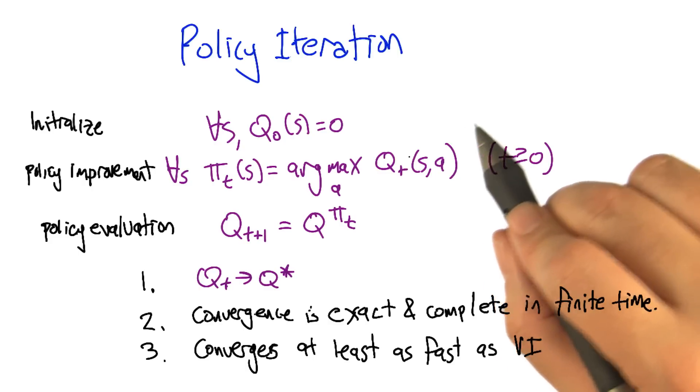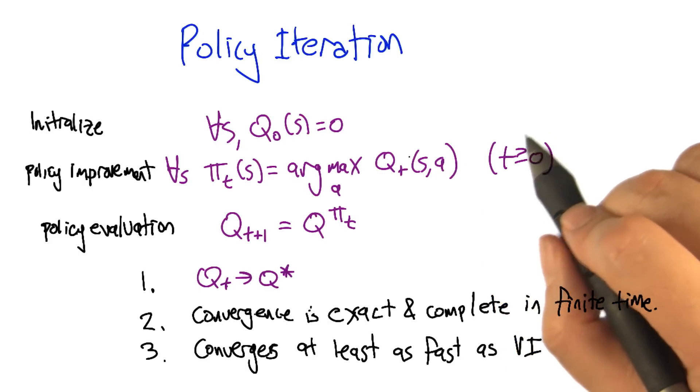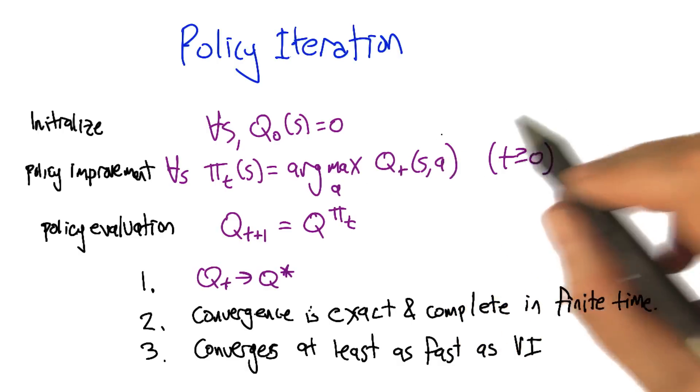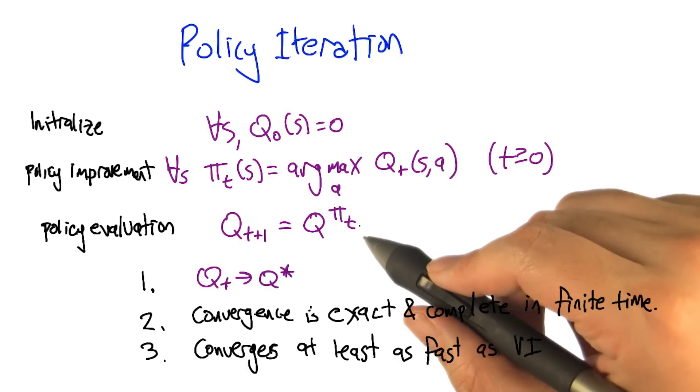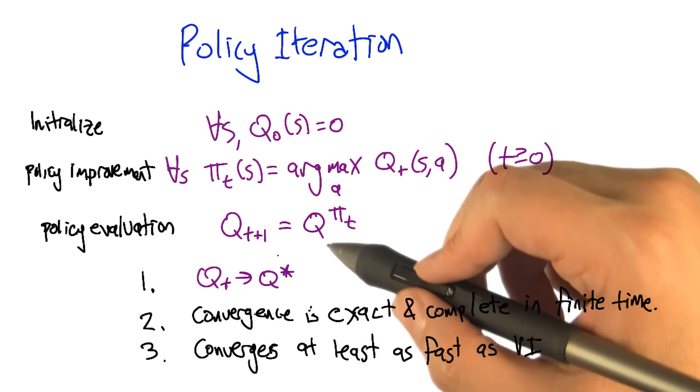What's the trade off? So where's the trade off here? We're getting faster convergence at the cost of greater computational expense. So in particular, this step, this policy evaluation step that says take the policy and then work out the Q function for that policy,